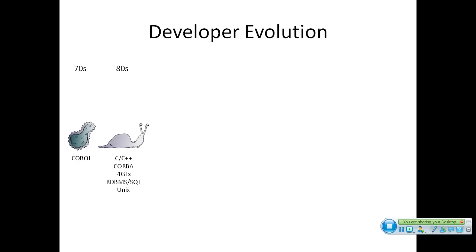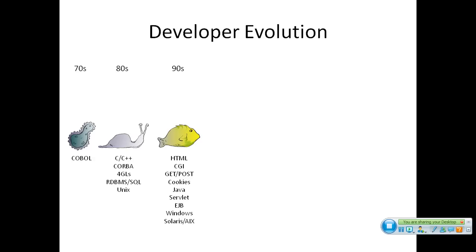In the 90s we had Visual Basic, PowerBuilder, SQL Windows, and then the web really took hold in the late 90s with HTML and CGI — learning GET, POST, URLs, form fields, cookies. Back then you had to convince people a cookie wouldn't steal their credit card. Java came along too: servlet technology, EJB — and as a developer you had to gain more and more skills from more and more vendors.